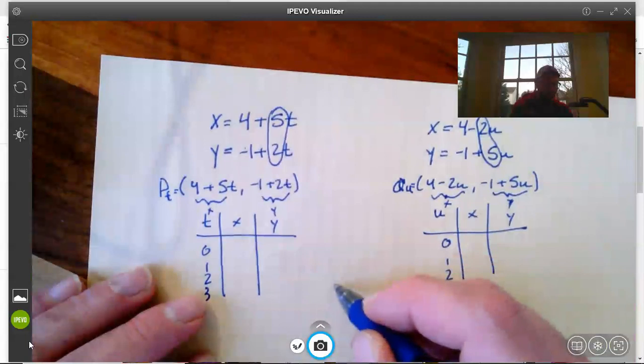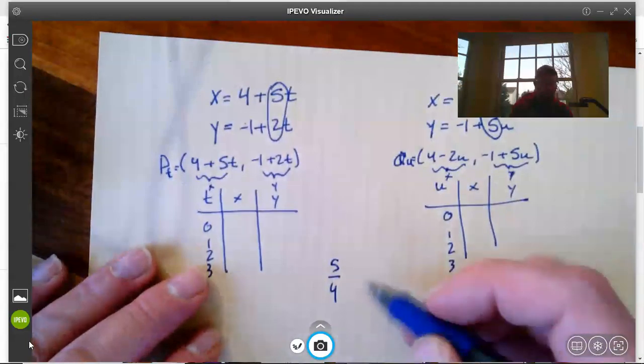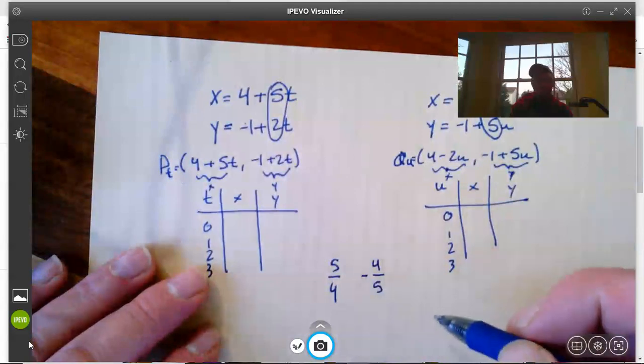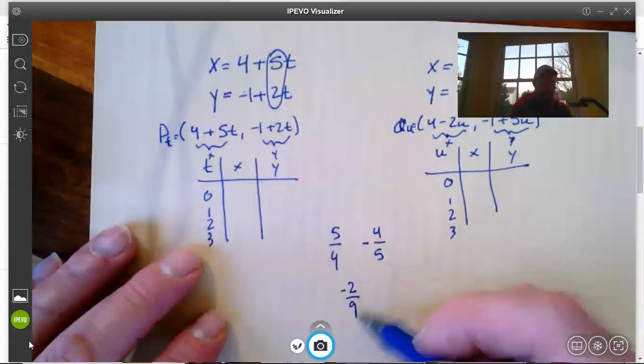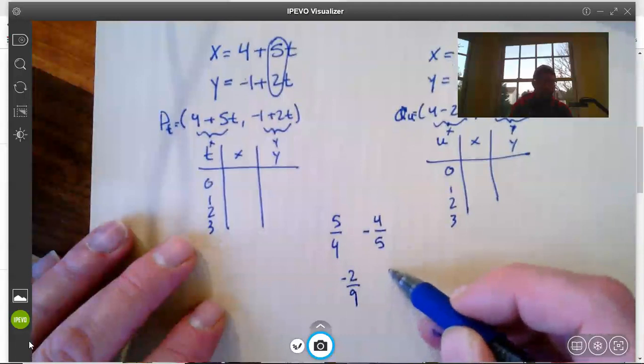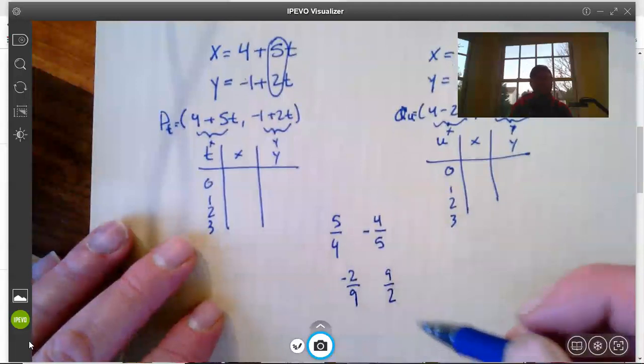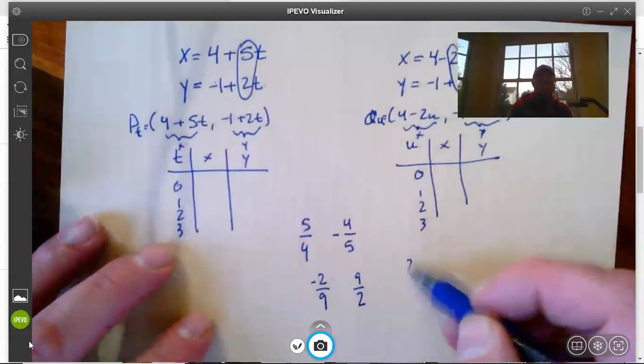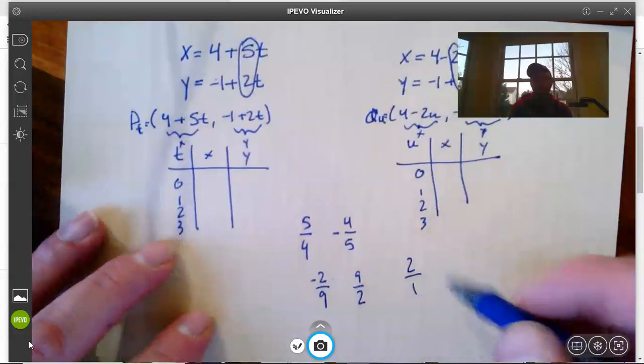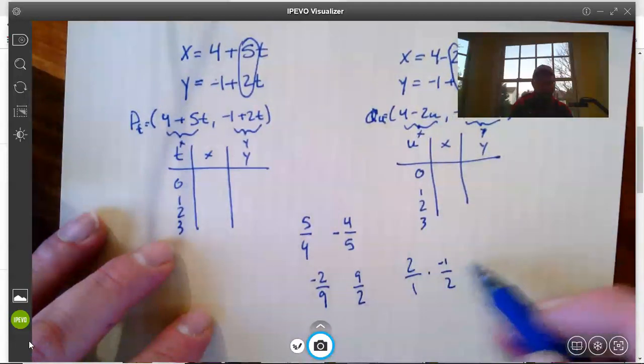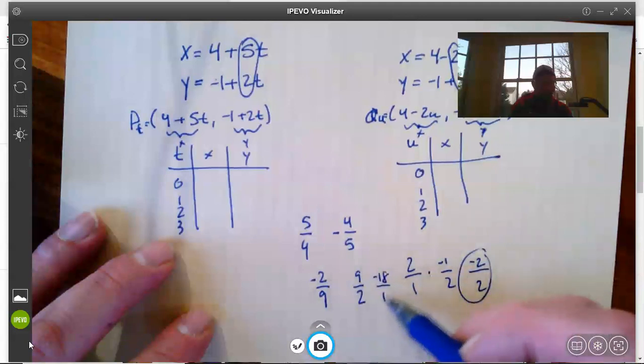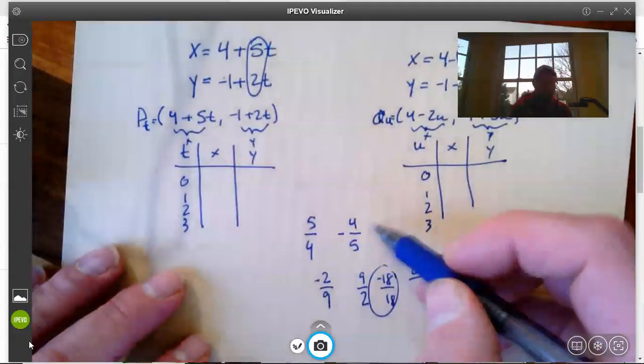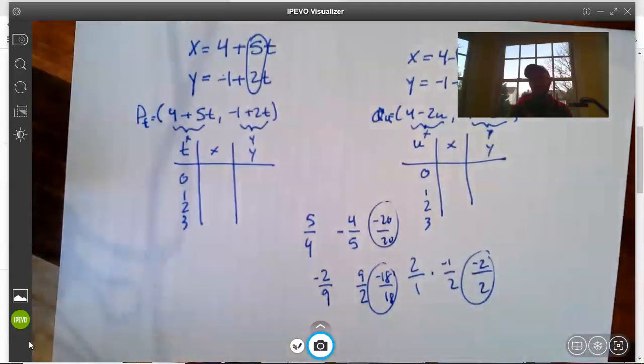So for example, 5 over 4 has a negative reciprocal of negative 4 over 5. Or on the other hand, negative 2 over 9 has a negative reciprocal of positive 9 over 2. Or even, for example, 2, we can think of as 2 over 1, and it has a negative reciprocal of negative 1 over 2. And you can see how if I multiply these together, I get negative 2 over 2, which is negative 1. Or I get negative 18 over 18, which is negative 1. Or I get negative 20 over 20 up here, which is negative 1.